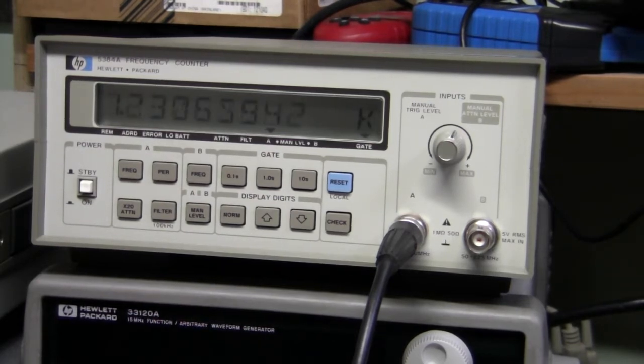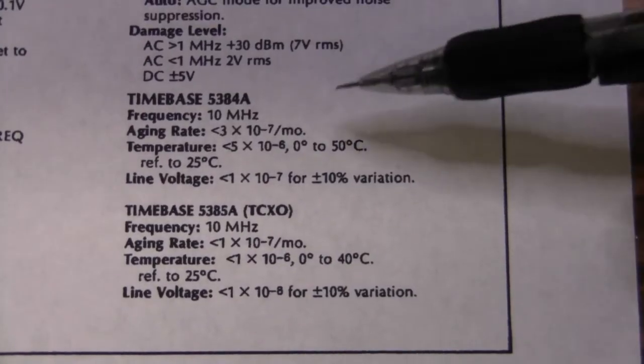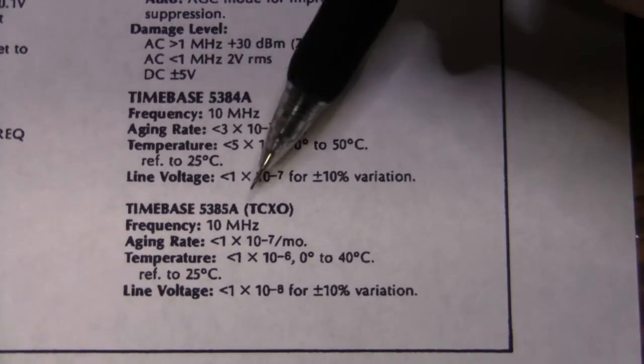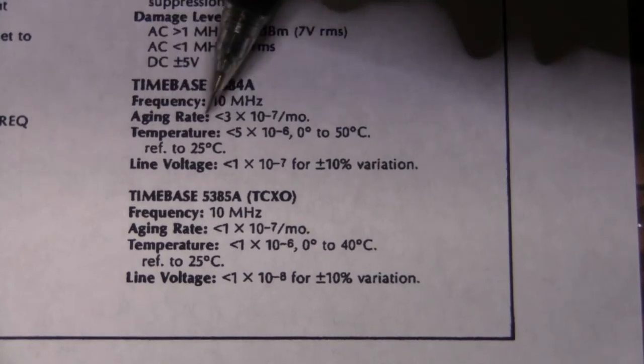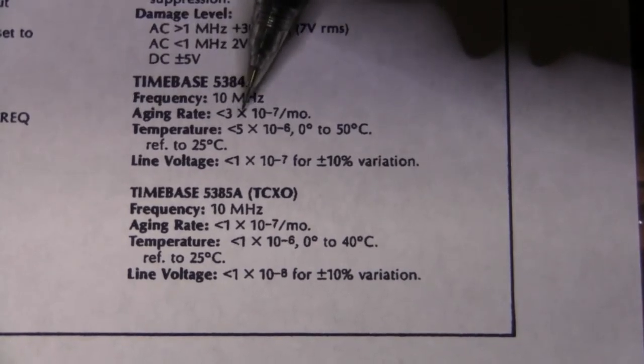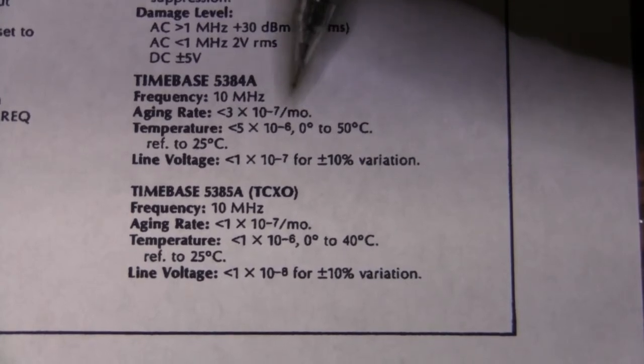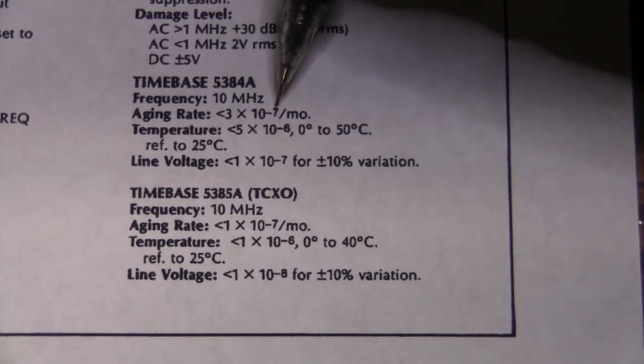So let's have a look at the specs of this guy. So here are the specs. This model is without TCXO. It means aging less than 3 times 10 to the minus 7 per month. So this 3 times 10 to the minus 7 is 0.3 ppm.